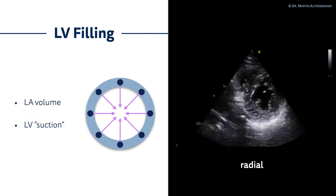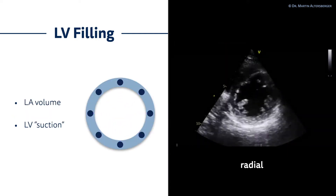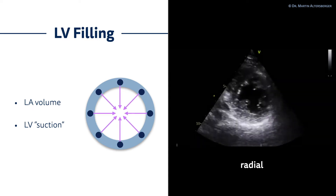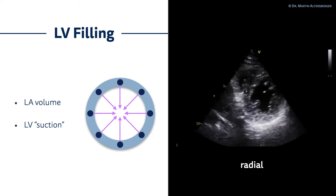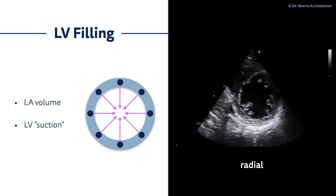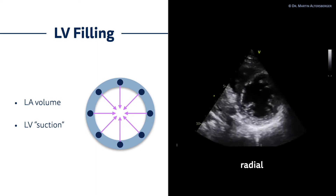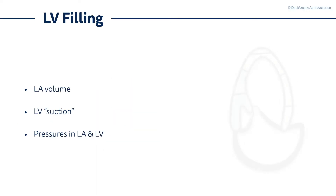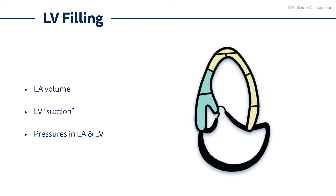The second factor which is important is left ventricular suction. As discussed in the previous lecture, the expanding of the left ventricle — the suction — is an active movement of the left ventricle and it contributes to a very large portion of left ventricular filling. Another very important factor of LV filling is the pressures in the left atrium, or elevation in the pressures in the left atrium, and the pressures of the left ventricle.